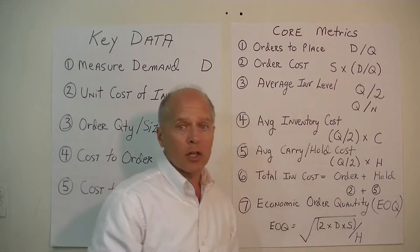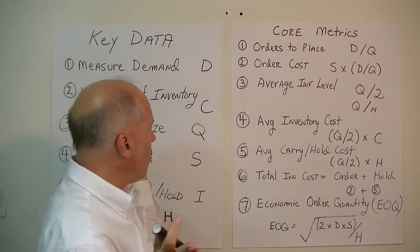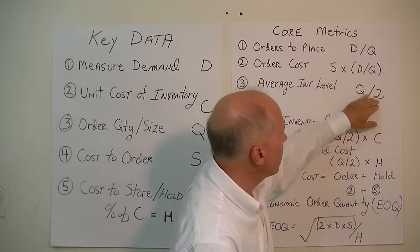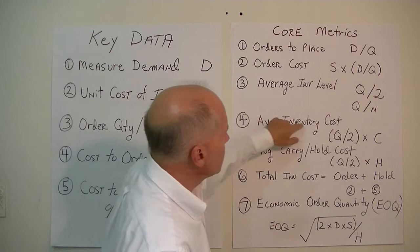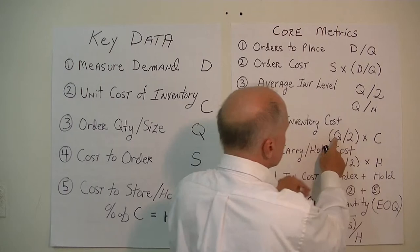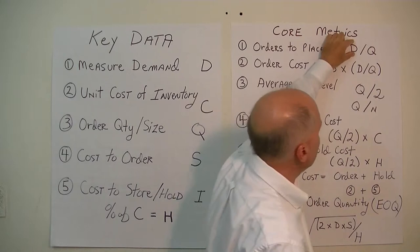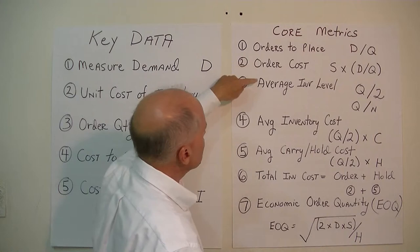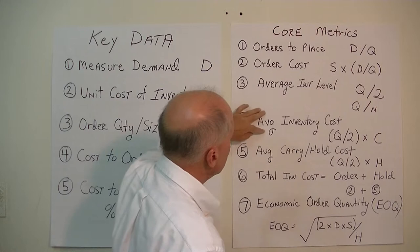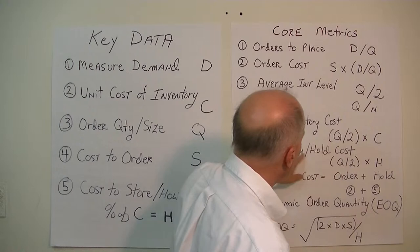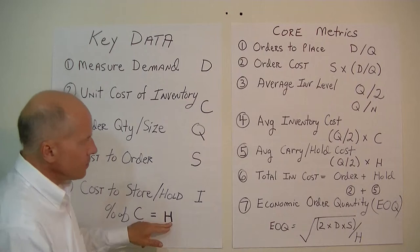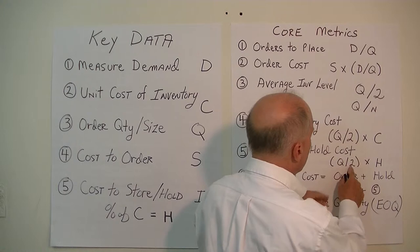The average inventory level in the EOQ model is Q divided by 2 — we want to hold very little inventory. In fact, Q divided by 2 is literally the average inventory level. The average inventory cost would be the average inventory level, Q divided by 2, times the unit cost C. With these data points plugged into the formulas, we can measure and figure out average inventory level, average inventory cost, and average carrying or holding cost.